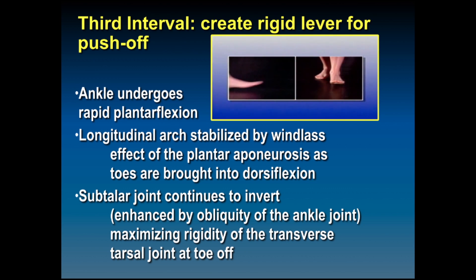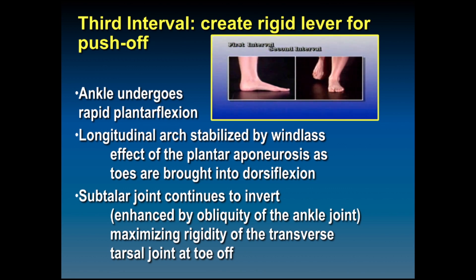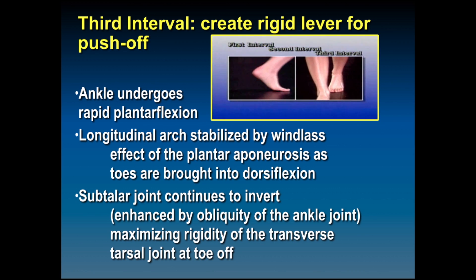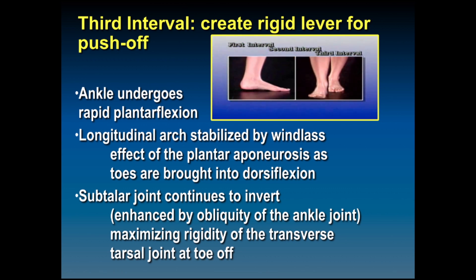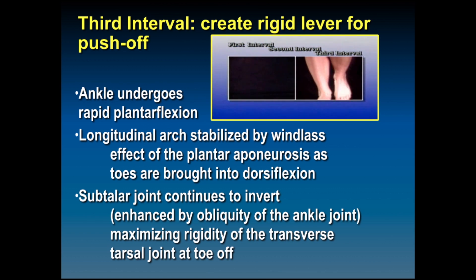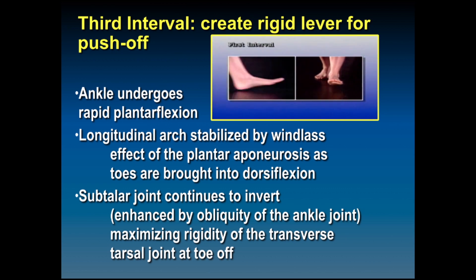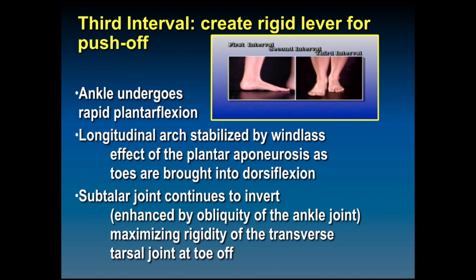The third interval creates a rigid lever for push off with the ankle undergoing rapid plantar flexion. You can see the first interval on the left-hand side of the video and then the third interval. The windlass effect of the aponeurosis occurs as the toes go into dorsiflexion, and the subtalar joint continues to invert, which is enhanced by that oblique axis of the ankle. That obliquity of the ankle axis maximizes the rigidity of the transverse tarsal joint at toe off.